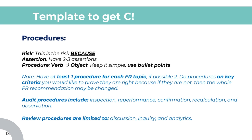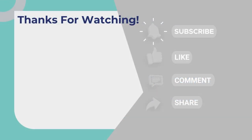Last tip: when writing an audit or review procedure, you need to know they're different. Audit procedures can only include inspection, re-performance, confirmation, recalculation, and observation. Whereas reviews can only include inquiry, discussion, and analytics — meaning you can only talk to the client, ask them questions, and do simple year-to-year calculations. It's important that you don't get these two mixed up because you want to demonstrate to the marker that you know what type of procedure you're writing. Thanks for watching — hopefully you learned something about the audit planning memo and can use this template in your cases going forward to get a C on each AO.